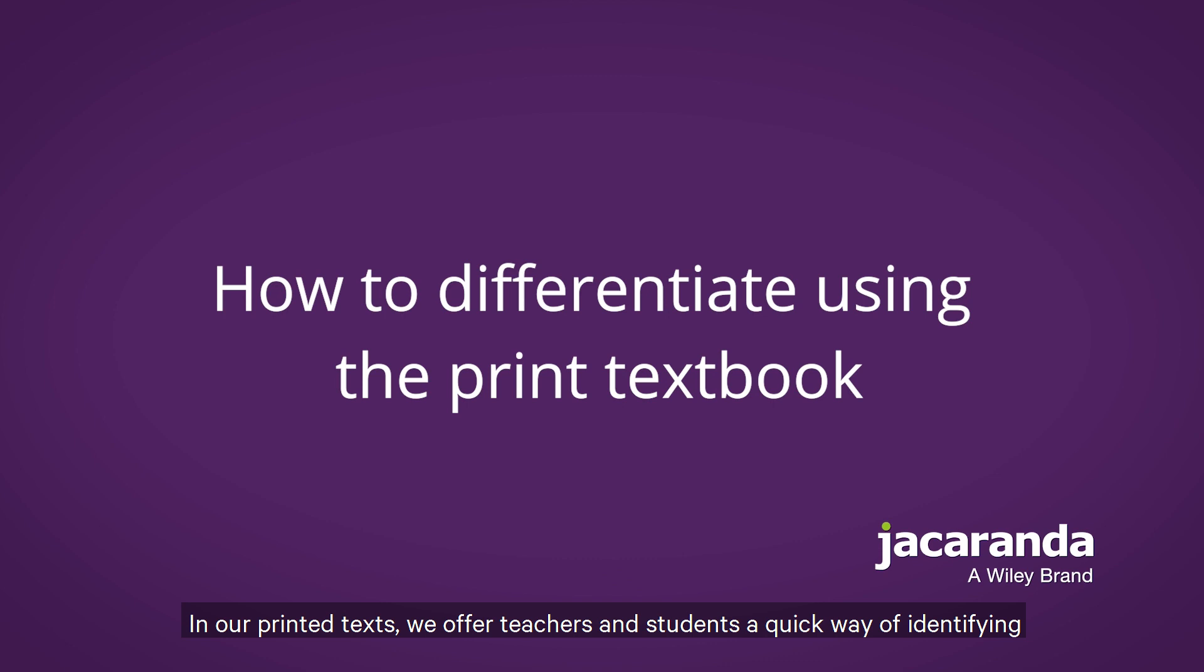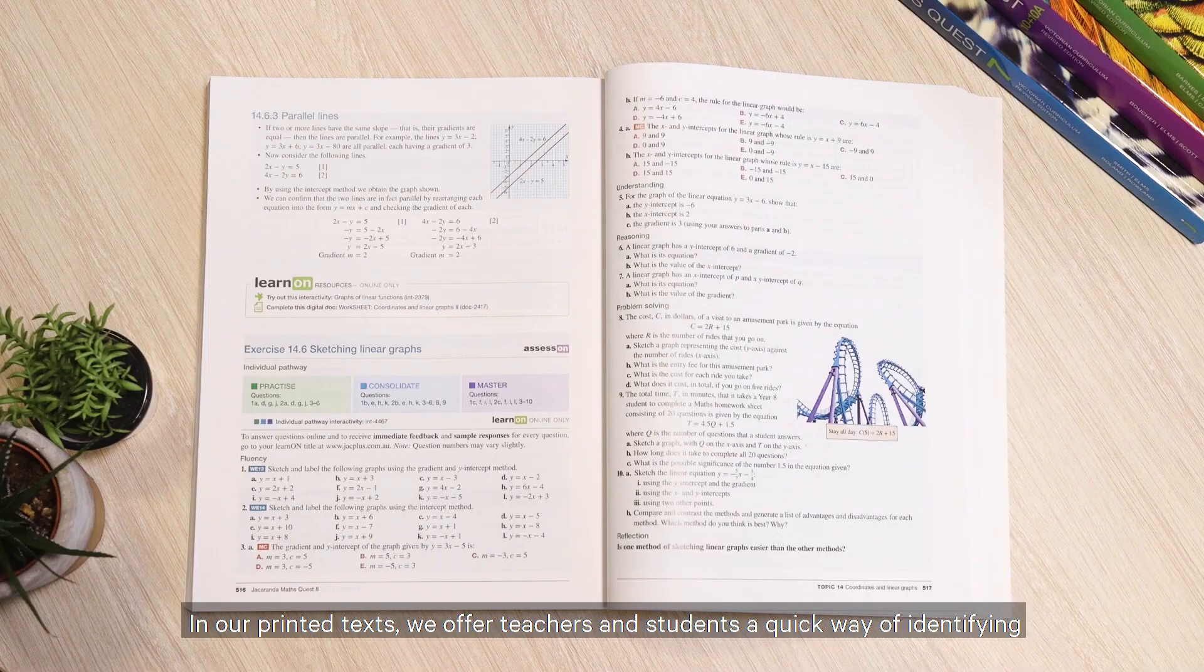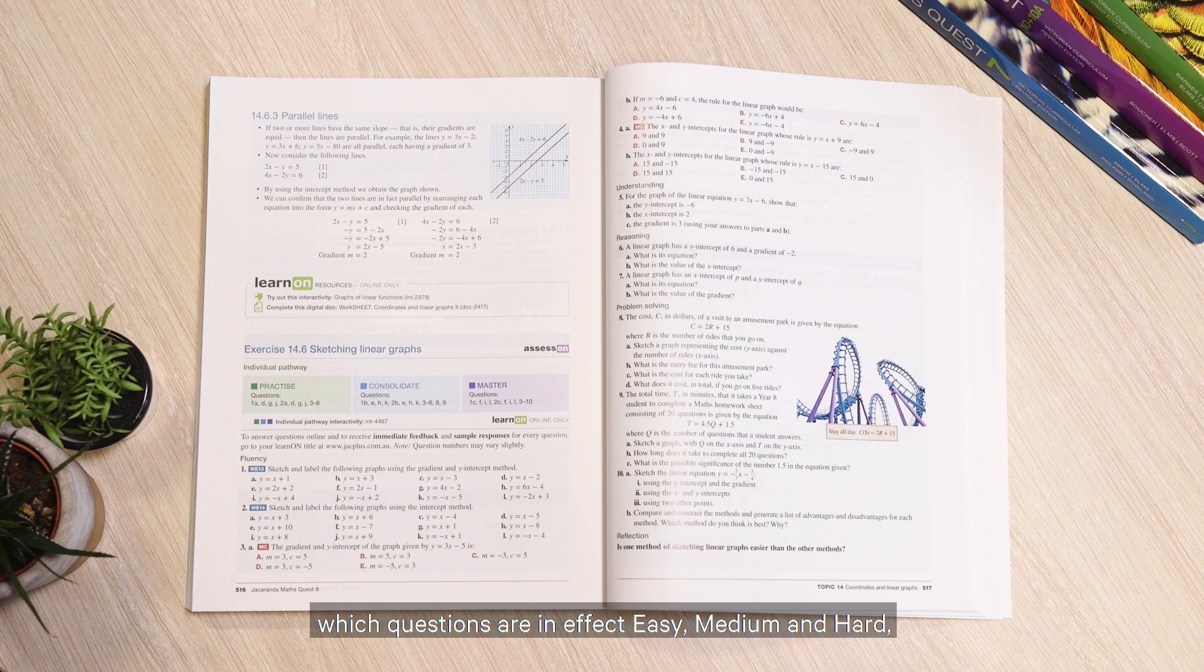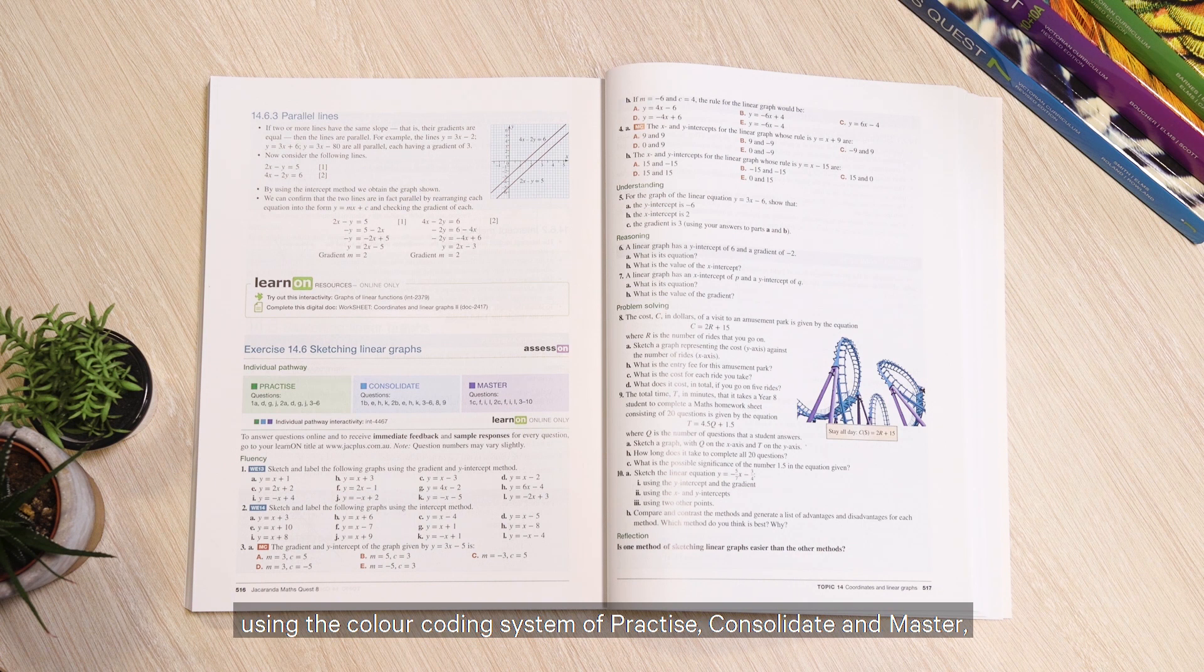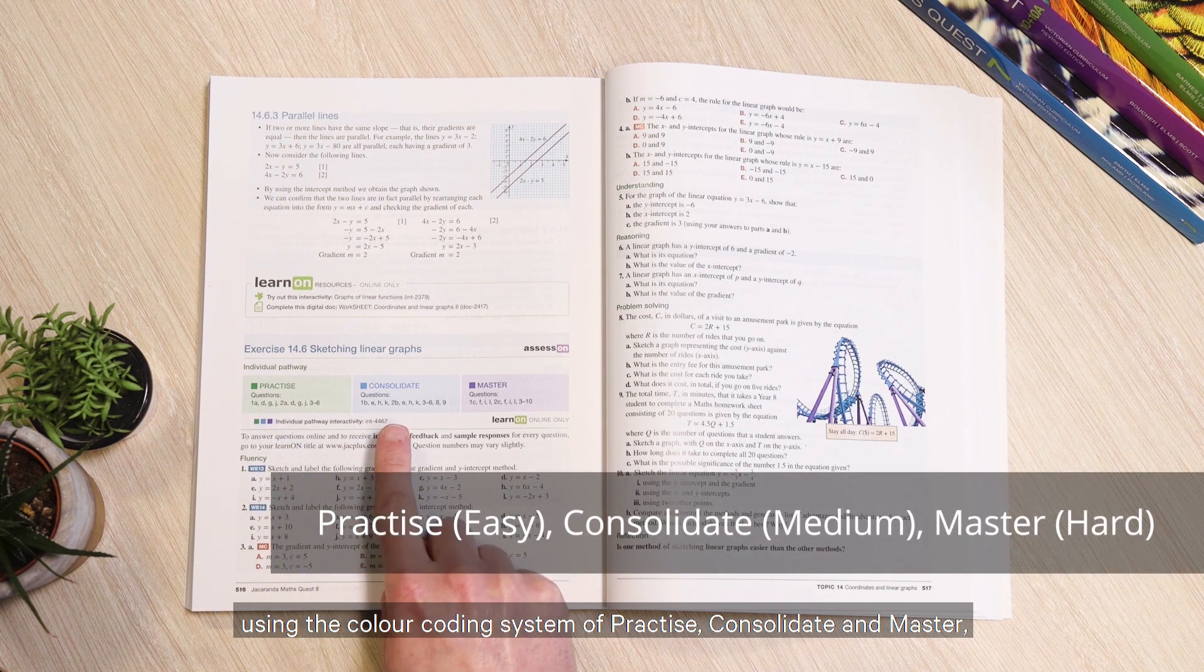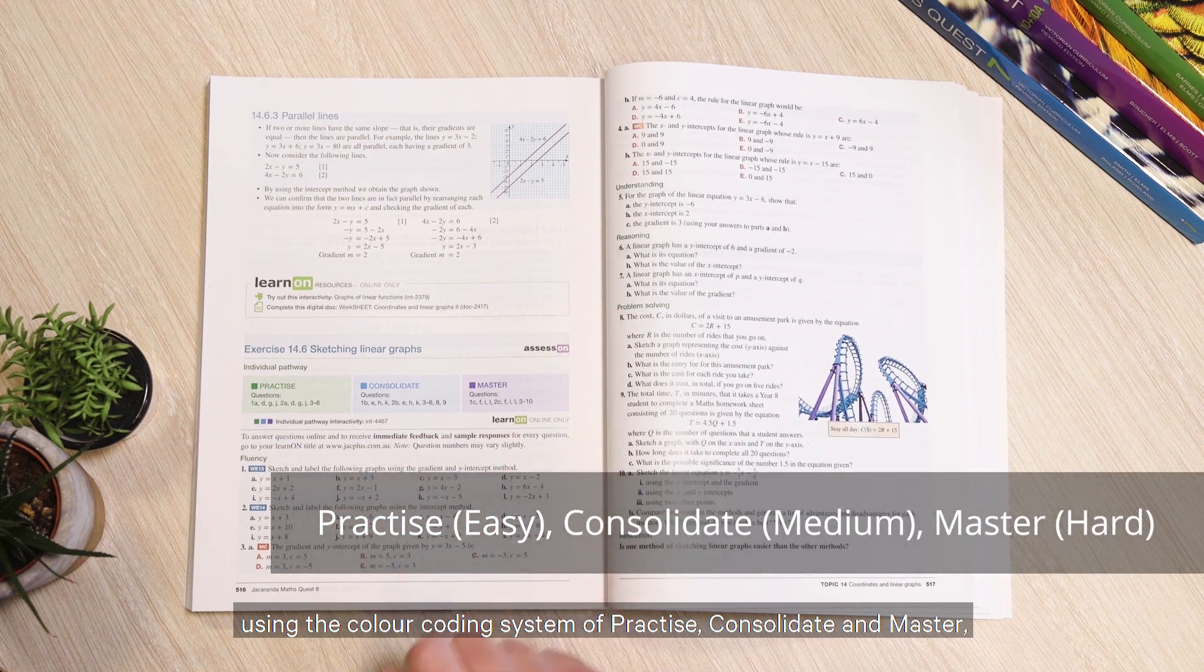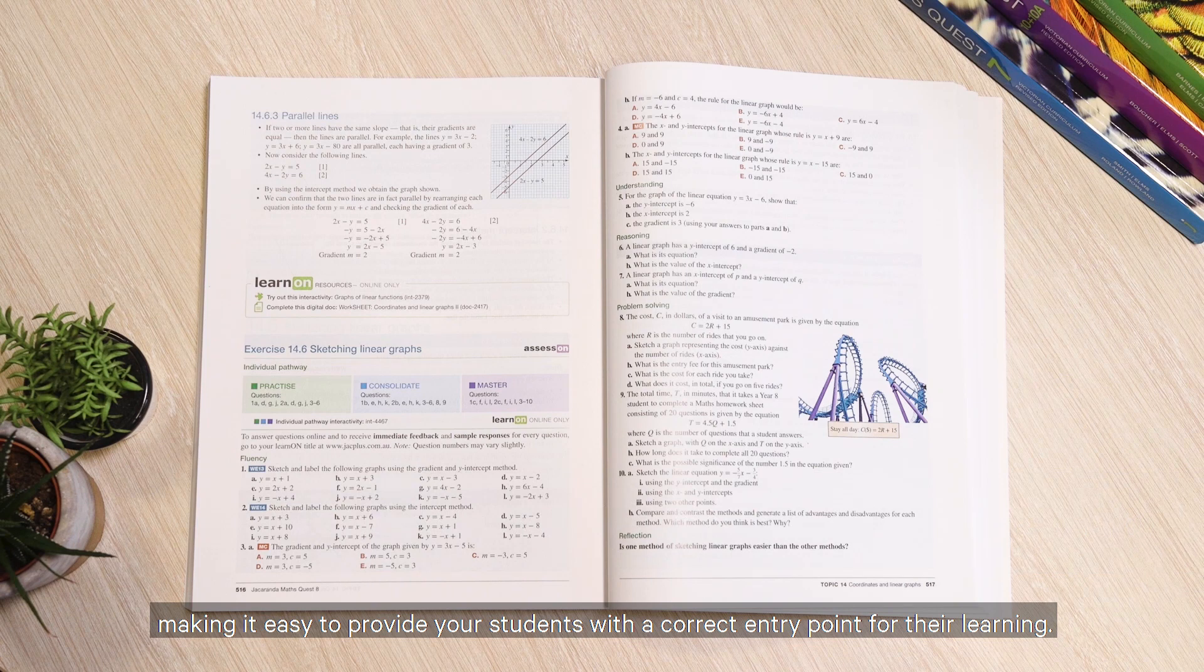In our printed texts, we offer teachers and students a quick way of identifying which questions are easy, medium and hard, using the colour coding system of practice, consolidate and master, making it easy to provide your students with the correct entry point for their learning.